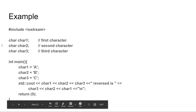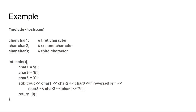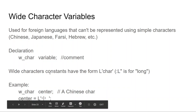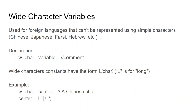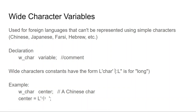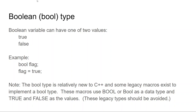Wide character variables are used for foreign languages that can't be represented using single characters. The wide char type contains the form L followed by a single quote and then the character. Programming is really English-centric — it's one of the advantages we have. Computing itself is just English-centric; it's happenstance that it is.